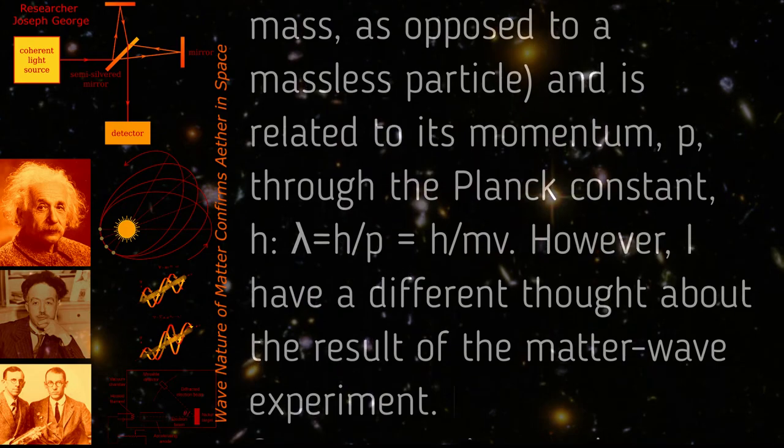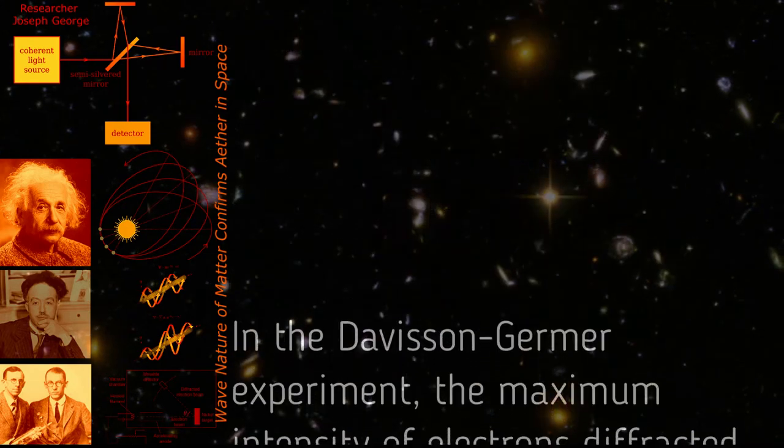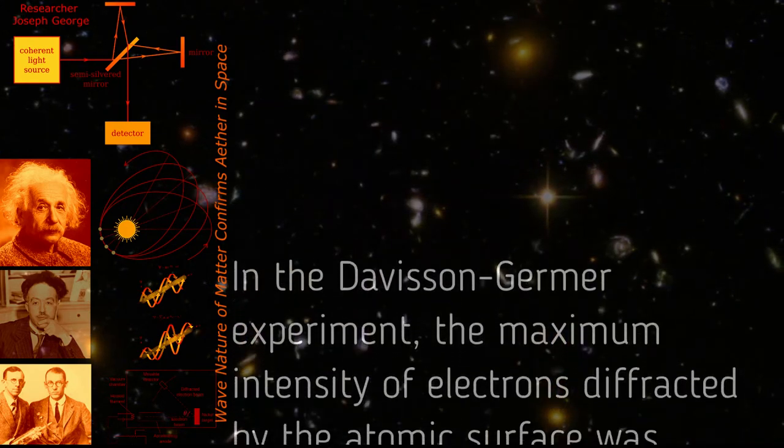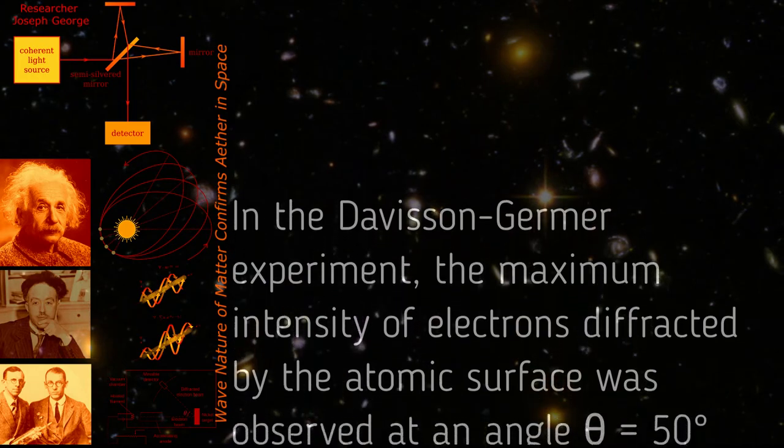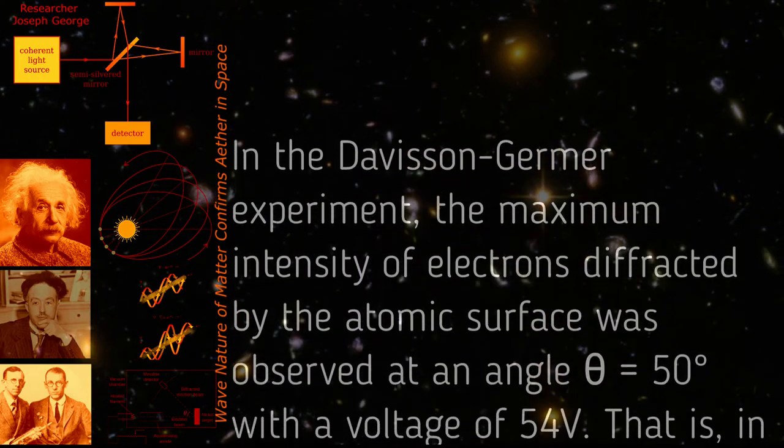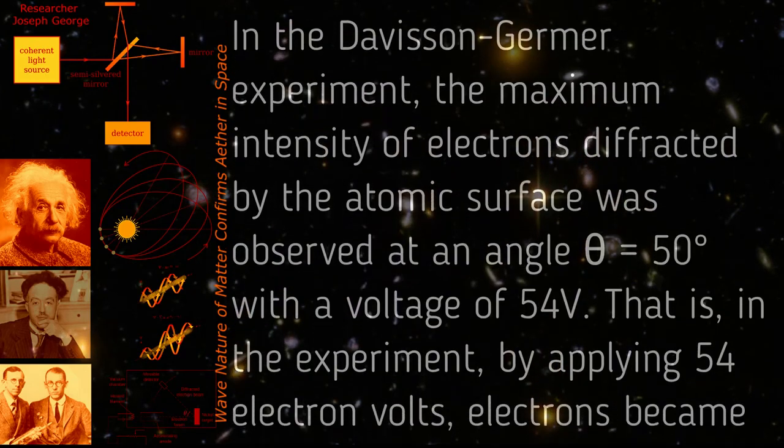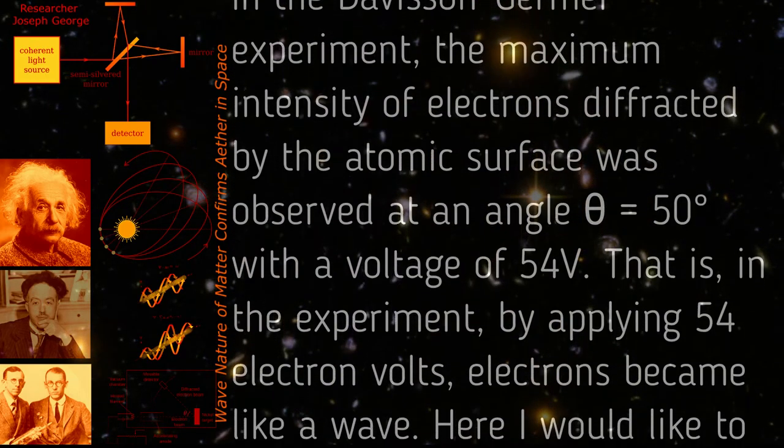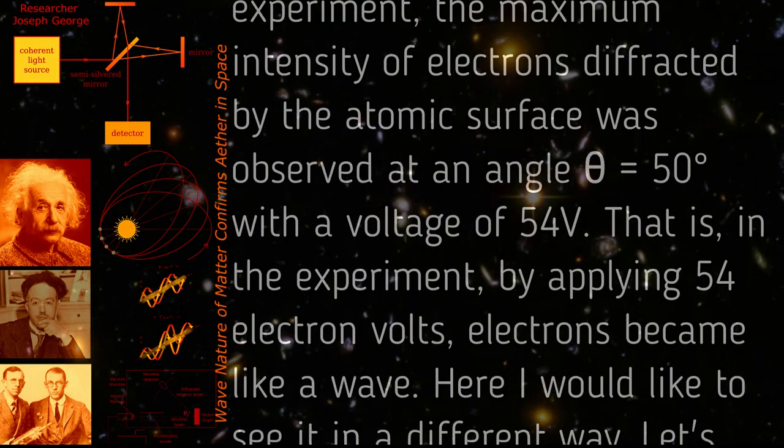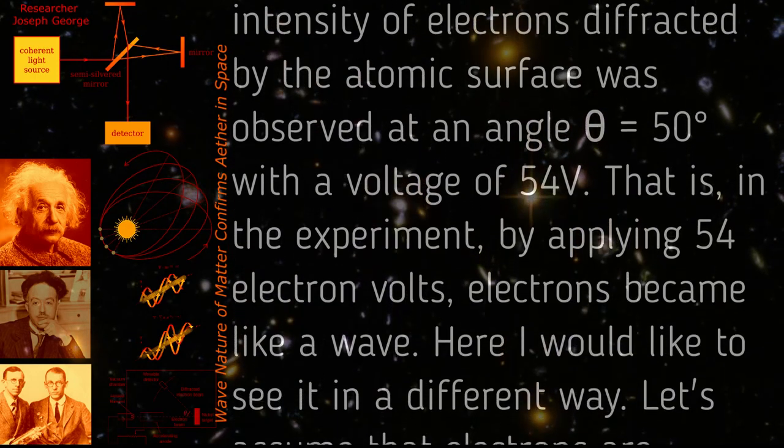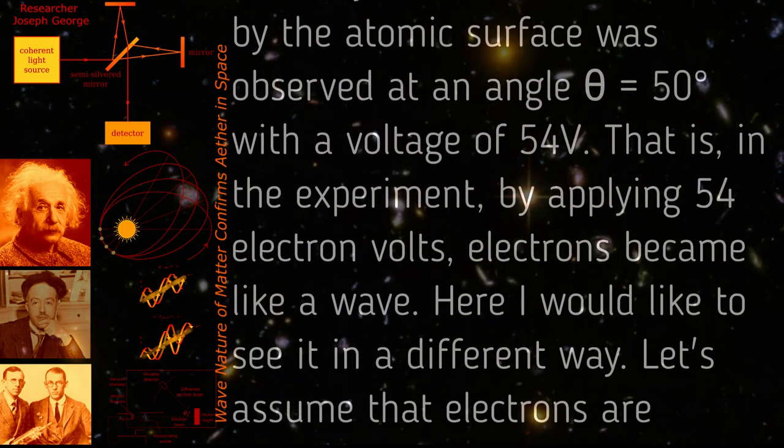However, I have a different thought about the result of the matter wave experiment. In the Davisson-Germer experiment, the maximum intensity of electrons diffracted by the atomic surface was observed at an angle theta equals 50 degrees with a voltage of 54 V. That is, in the experiment, by applying 54 electron volts, electrons became like a wave. Here I would like to see it in a different way.